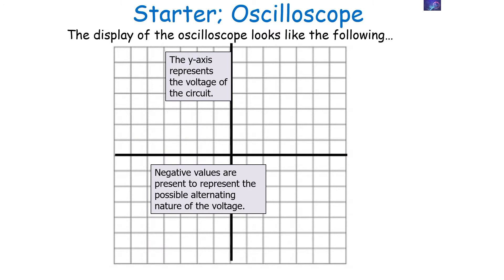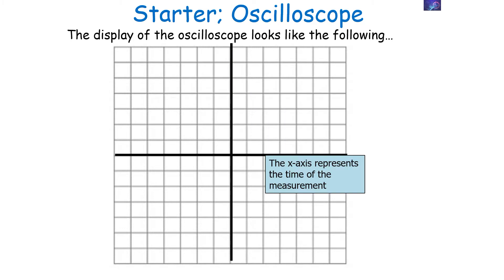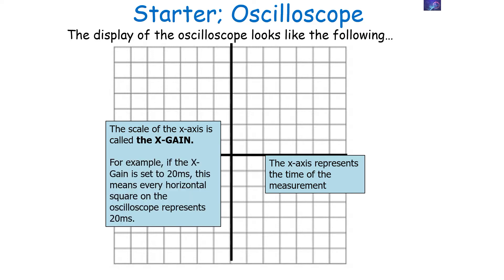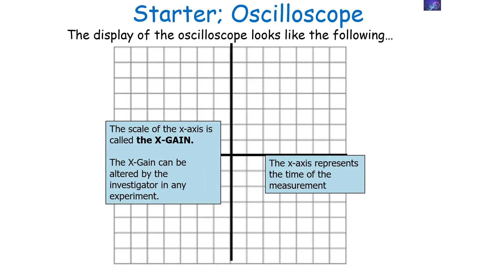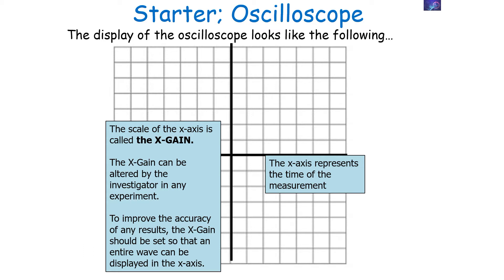On the oscilloscope trace, negative values are present to represent the alternating voltage nature of the voltage. If the line of a trace stays solely as either a positive or negative value, it can be considered direct current. The x-axis represents the time of the measurement, and the scale of the x-axis is called the x-gain. For example, if the x-gain is set to 20 milliseconds, every horizontal square on the oscilloscope represents 20 milliseconds. The x-gain can be altered by the investigator, and should be set so the entire waveform can be displayed in the x-axis to improve accuracy.